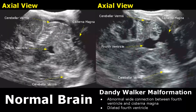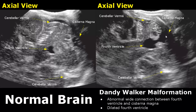This is an axial view of a normal brain showing the cerebellum, the fourth ventricle, and the hyperechoic cerebellar vermis. This anechoic region is the cisterna magna. In Dandy-Walker malformation there is an abnormal wide connection between the fourth ventricle and cisterna magna, and the fourth ventricle is dilated.